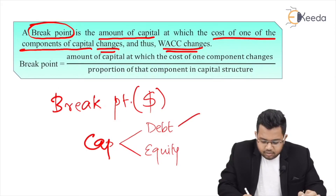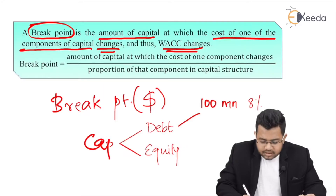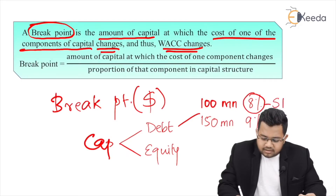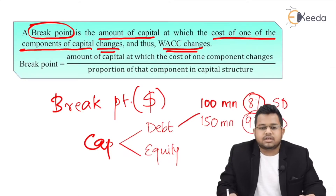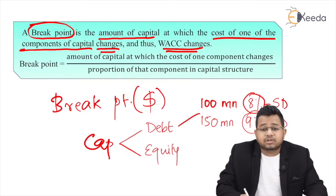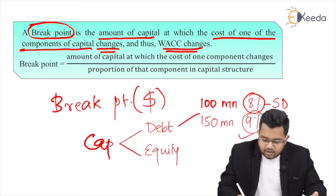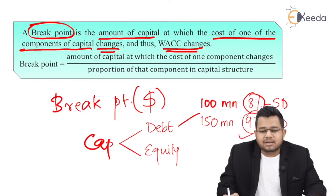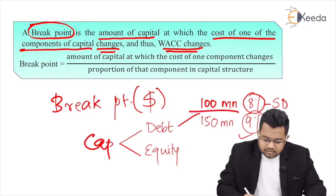For example, if I want to raise debt of 100 million, my cost of debt can be 8%. But if I want to raise more — say 150 million — the cost of debt can increase to 9%. Quite possibly, 8% is senior debt and 9% is junior debt because it is costlier. From 100 to 150 there is a change; at 101 million the cost of debt is changing. So basically, 101 is a change point — that is what a breakpoint is.